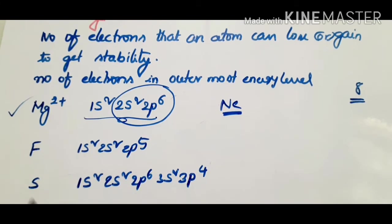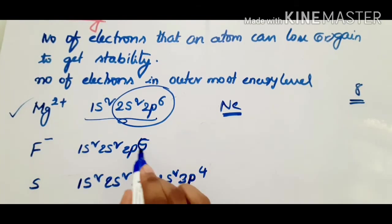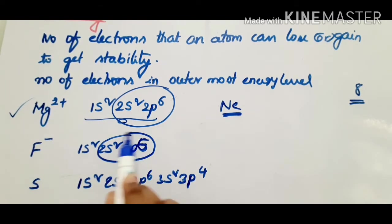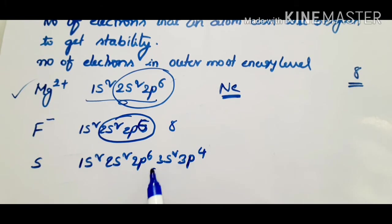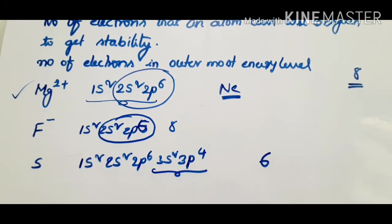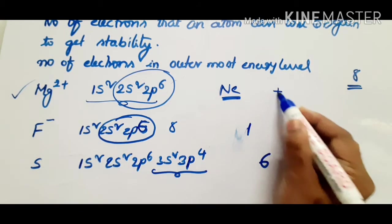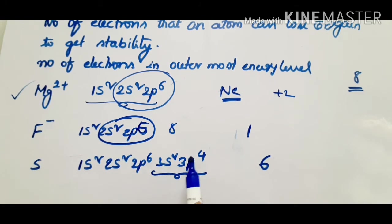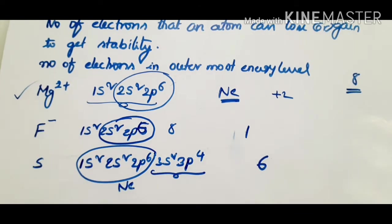For example, fluorine has atomic number 9 and electron configuration 1s2, 2s2, 2p5. So F minus equals 1 — this electron is gained and it becomes stable, with the outermost shell having 8 electrons equal to neon configuration. For sulfur: 1s2, 2s2, 2p6, 3s2, 3p4 — outermost shell has 6 electrons, so valency equals 2 by gaining. And for MgO, Mg2+ loses 2 electrons.